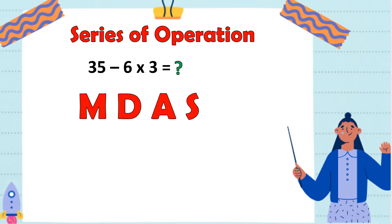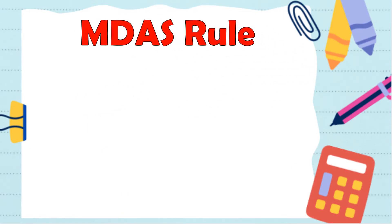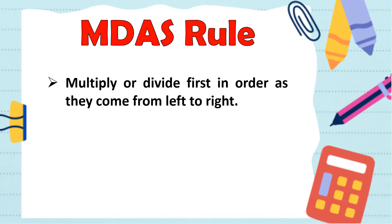Isosolve natin ito gamit ang M-DAS. M stands for multiplication, D for division, A for addition, and S for subtraction. Paano ba isinasagawa ang M-DAS? Narito ang M-DAS rule. M-DAS rule says that first, multiply or divide first in order as they come from left to right. Ang gagawin natin sa series of operation, mag-multiply muna tayo o mag-divide, depende kung sino ang mas nauna, simula left to right.